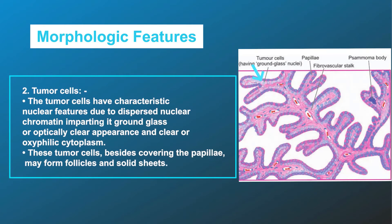Second, tumor cells: the tumor cells have characteristic nuclear features due to dispersed nuclear chromatin, imparting a ground glass or optically clear appearance, and clear or oxyphilic cytoplasm. These tumor cells, besides covering the papillae, may form follicles and solid sheets.